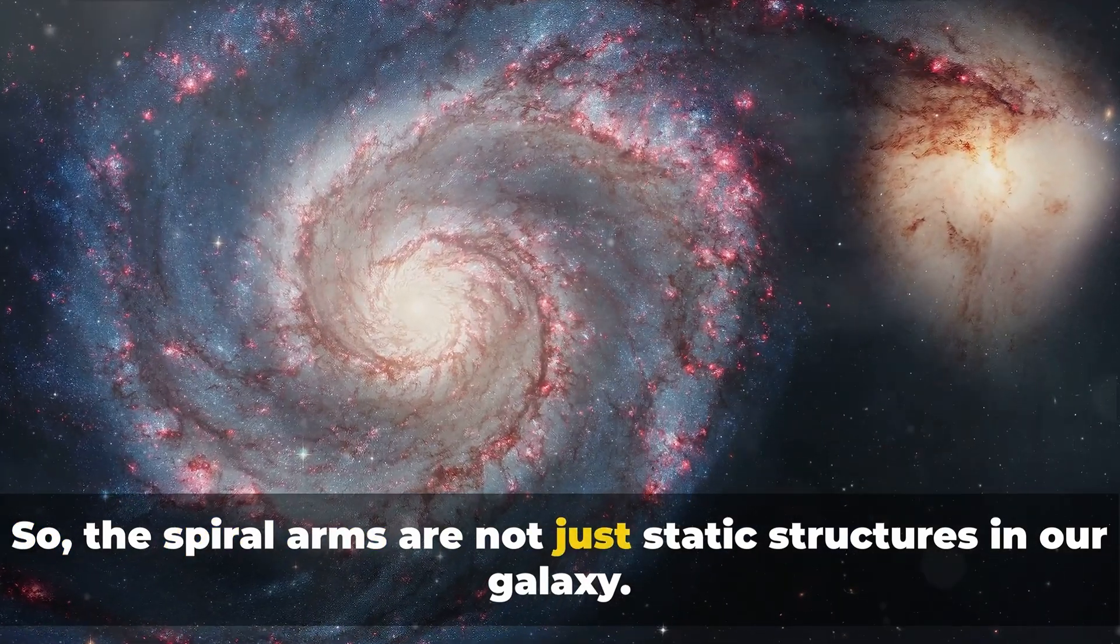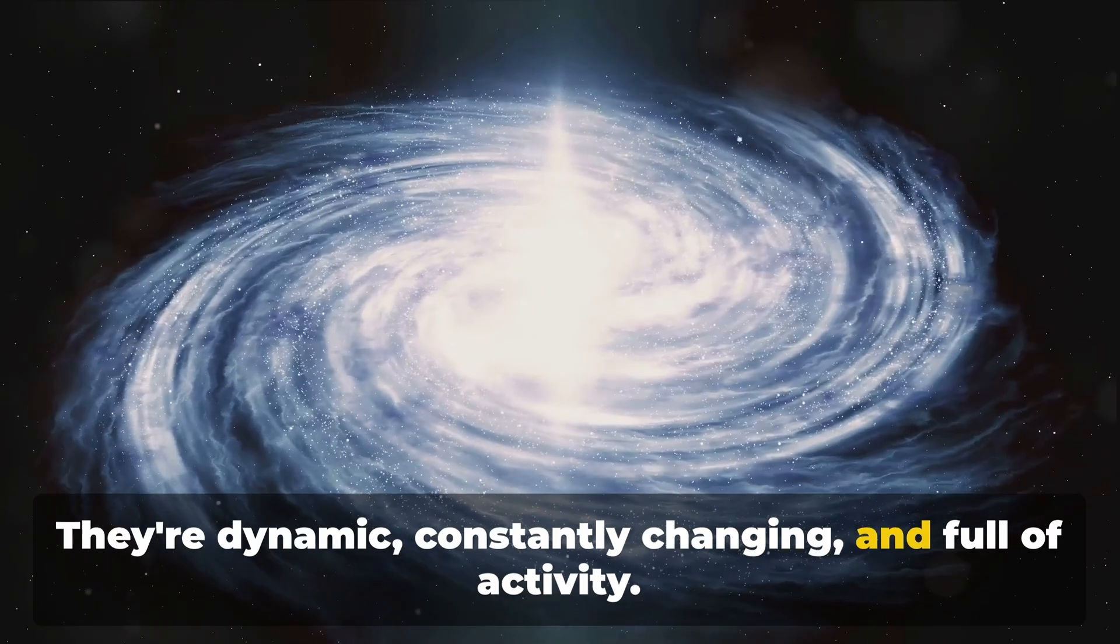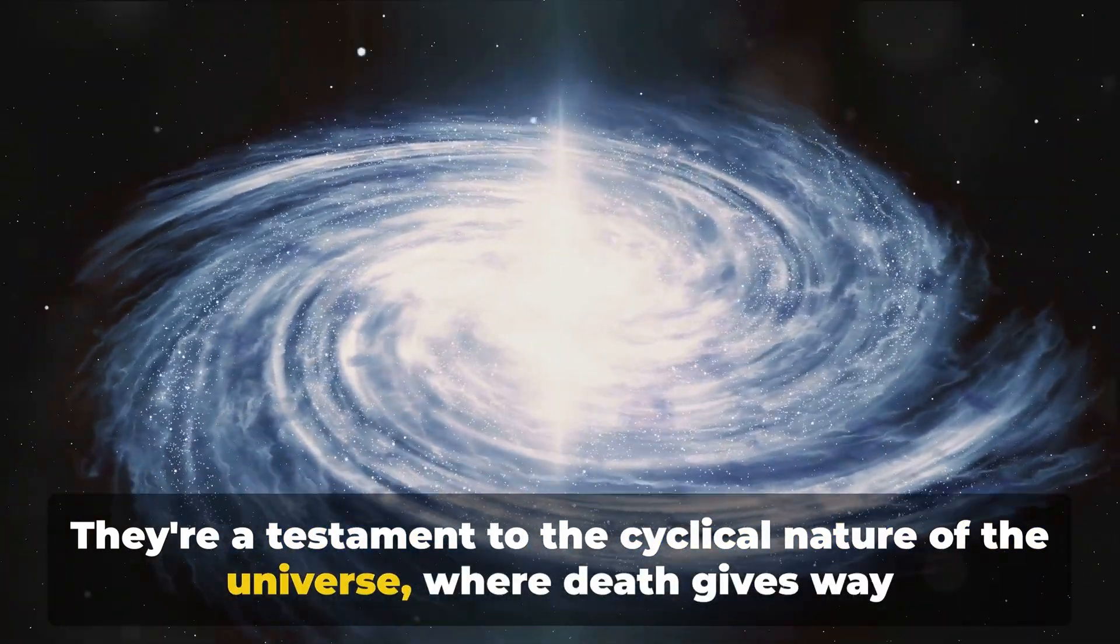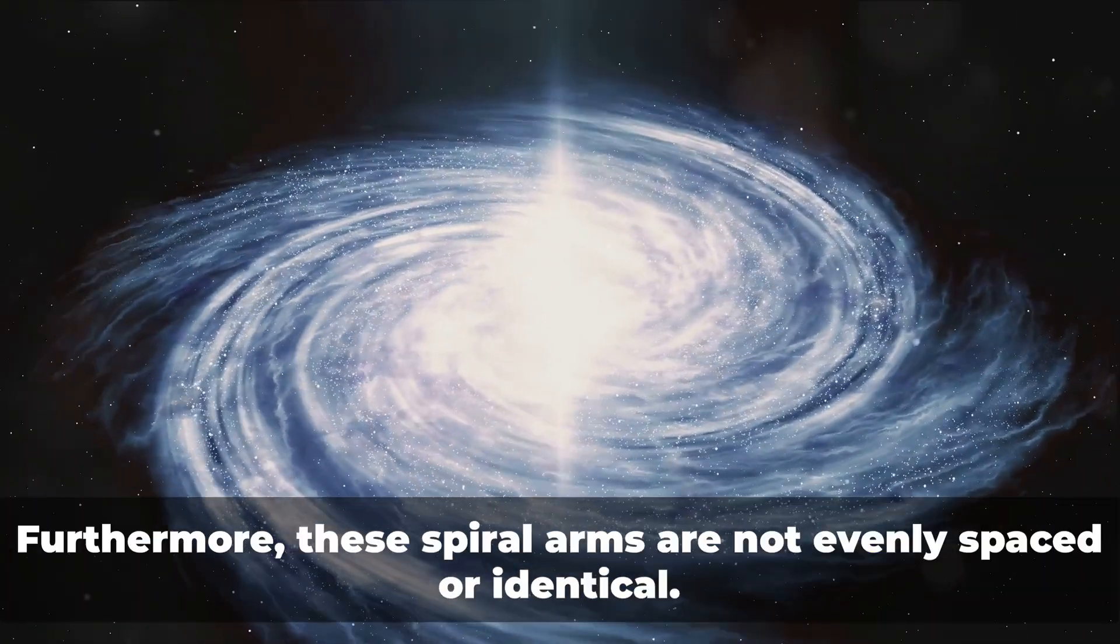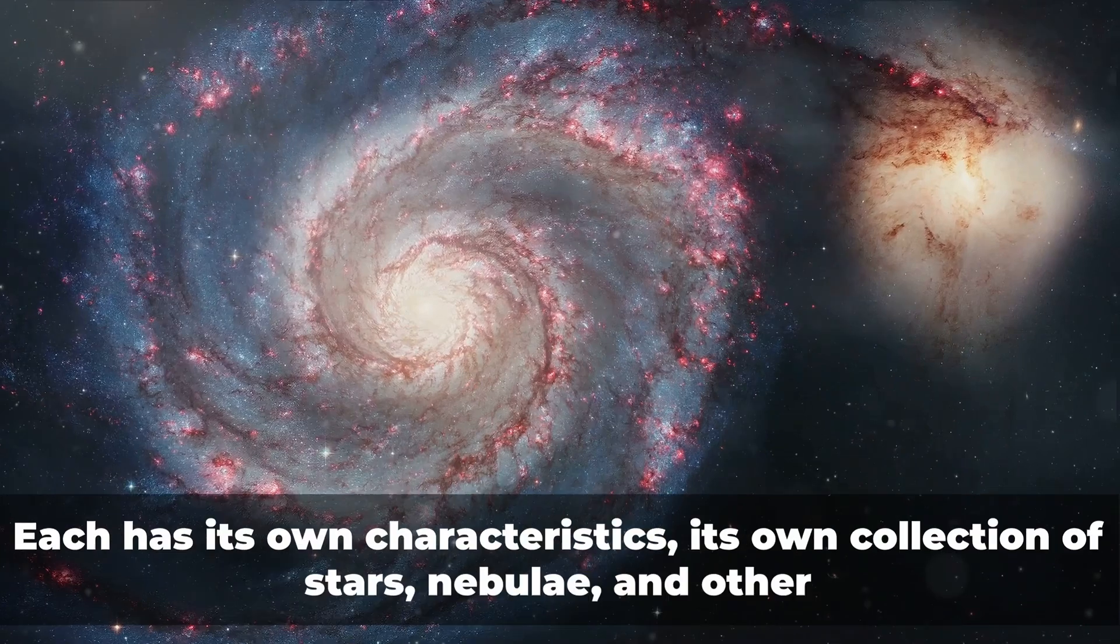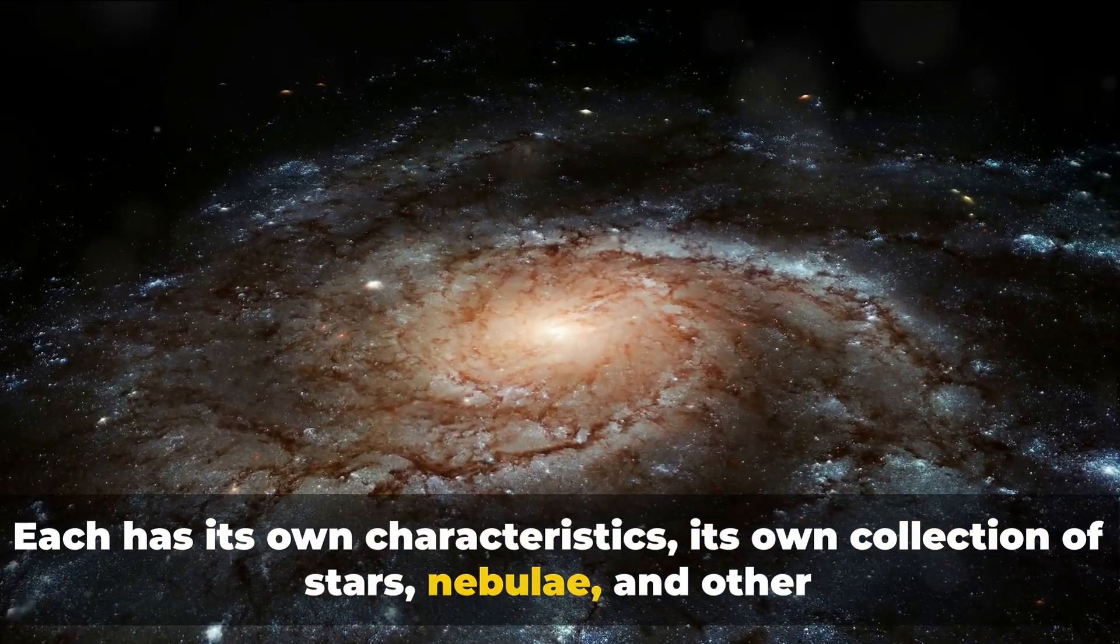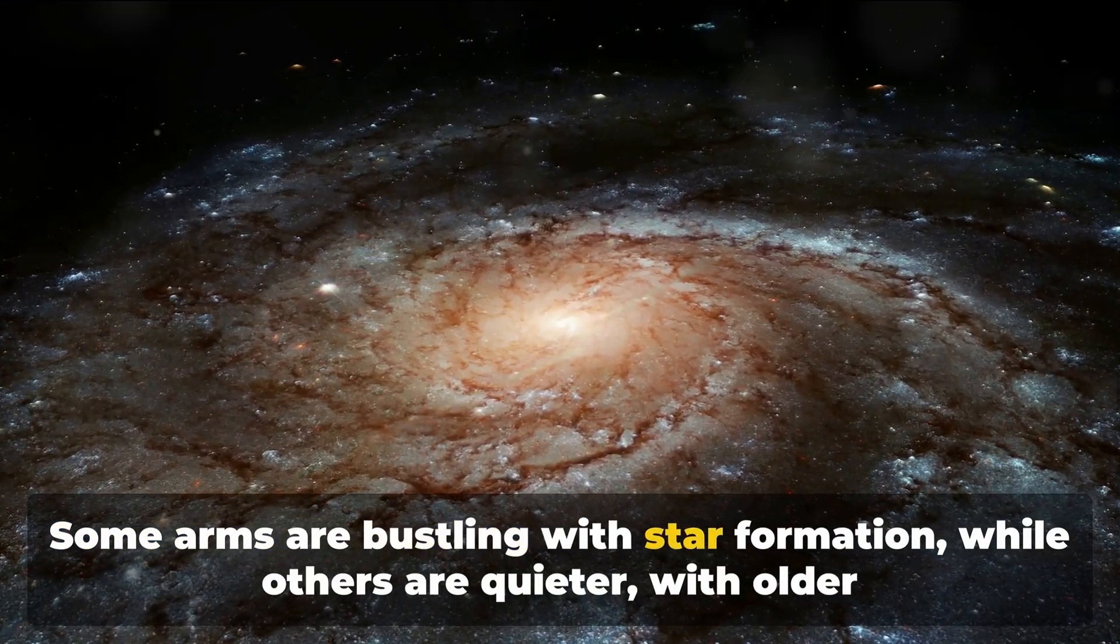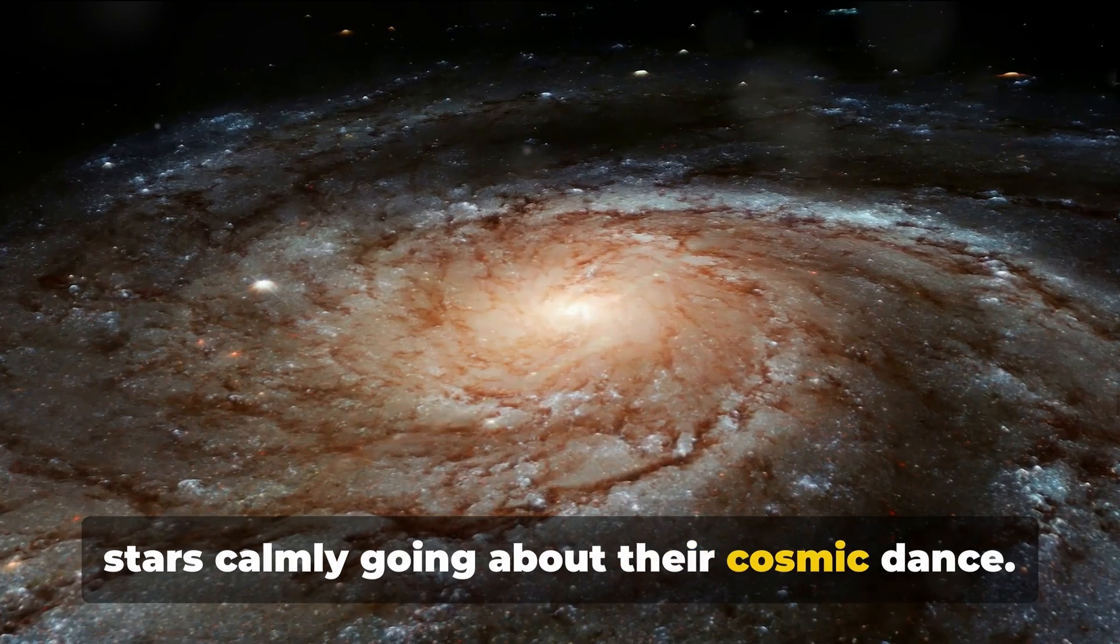So, the spiral arms are not just static structures in our galaxy. They're dynamic, constantly changing, and full of activity. They're a testament to the cyclical nature of the universe, where death gives way to new life, and the cycle continues. Furthermore, these spiral arms are not evenly spaced or identical. Each has its own characteristics, its own collection of stars, nebulae, and other celestial objects. Some arms are bustling with star formation, while others are quieter, with older stars calmly going about their cosmic dance.